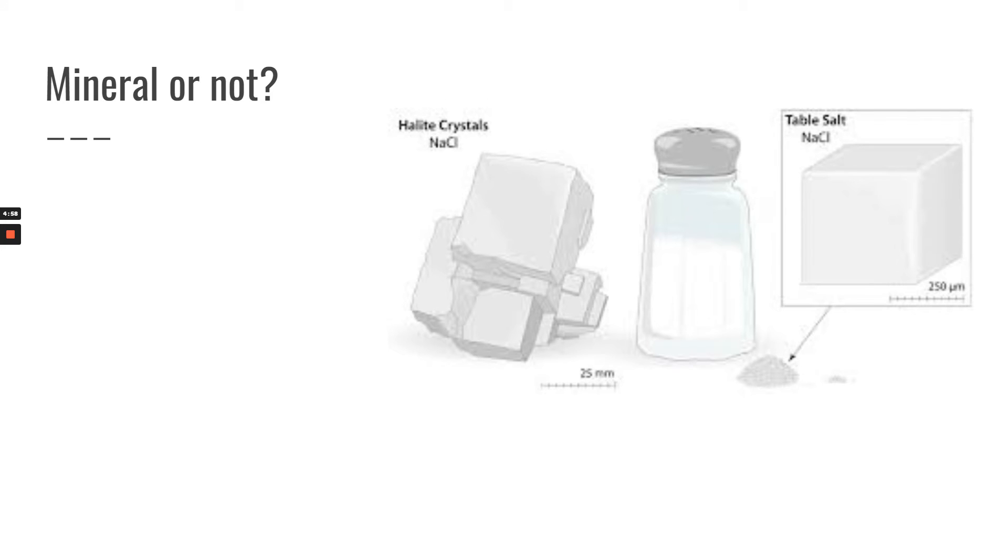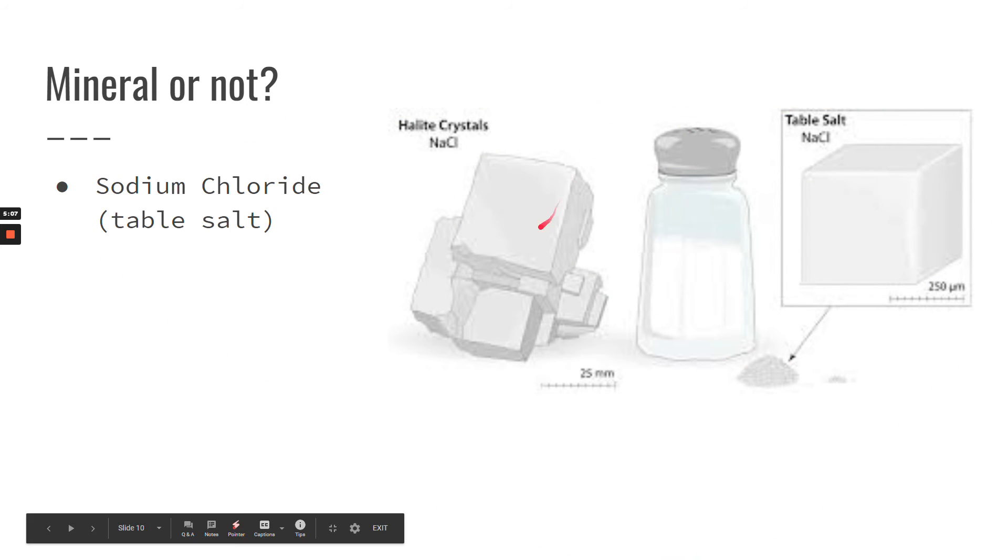So we'll do another example. Here is halite. This is table salt. Sodium chloride. Is this a mineral or not? So we'll go through our list again. Is it naturally occurring? Yes. Is it a solid? Yes. Does it have a definite chemical composition? Yes. NaCl. Does it have an orderly pattern? I'm going to say yes.